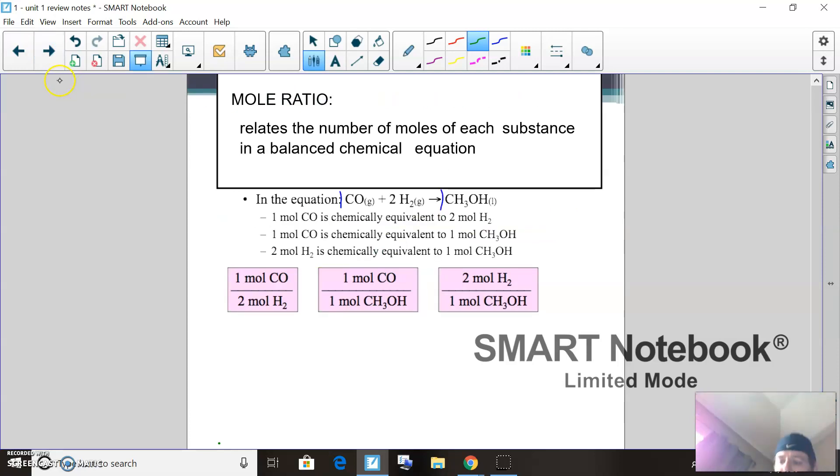In this equation here, if there's just one there, two there, one there, what this means is just one mole, two moles, and one mole. Remember, a mole is just a number—it's 6.022 times 10 to the 23rd.